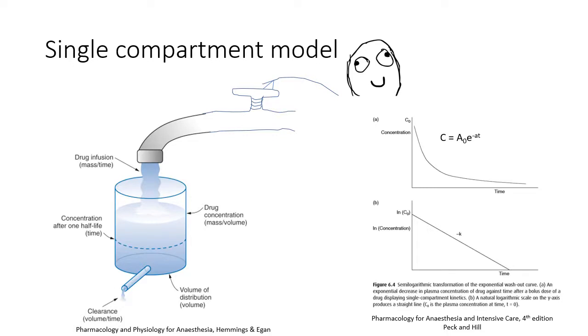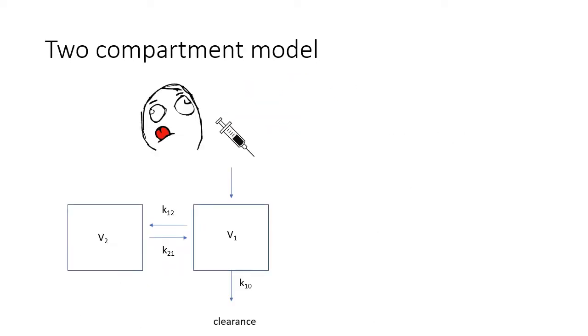This can be modelled according to single compartment washout curves, as we have seen in previous lectures. However, we learn in anaesthetic pharmacology that it is more appropriate to consider the body as comprising several compartments with differing behaviours.